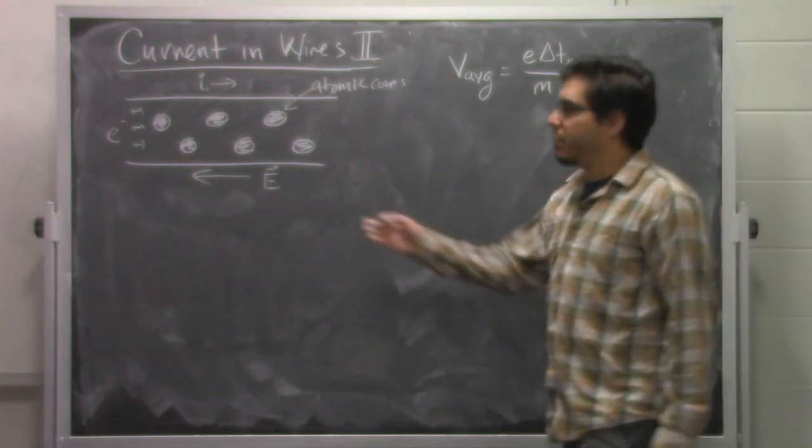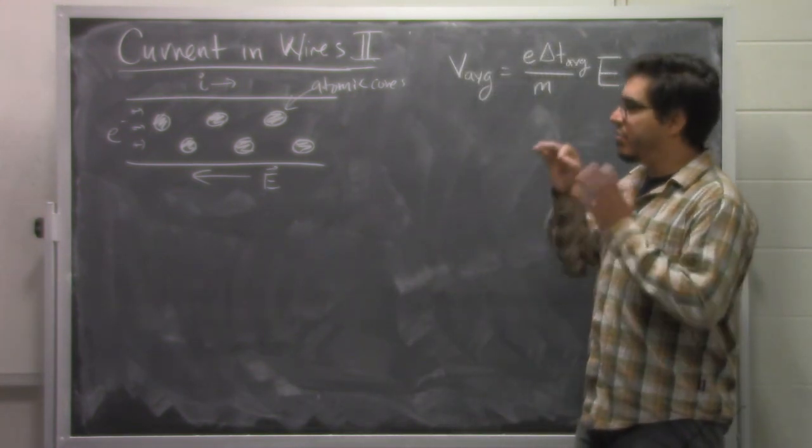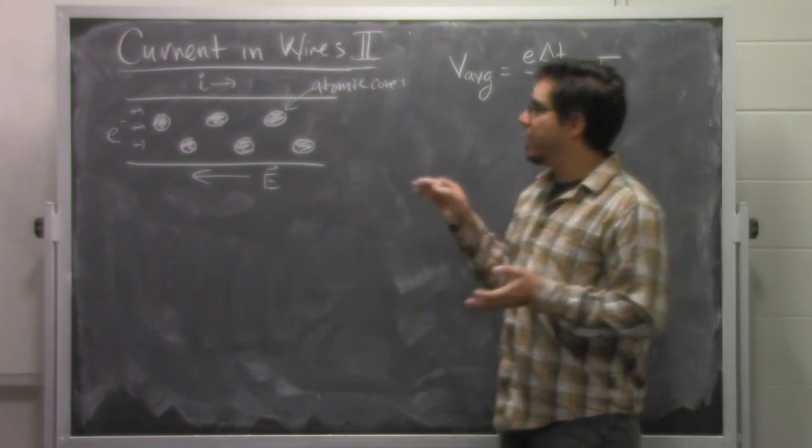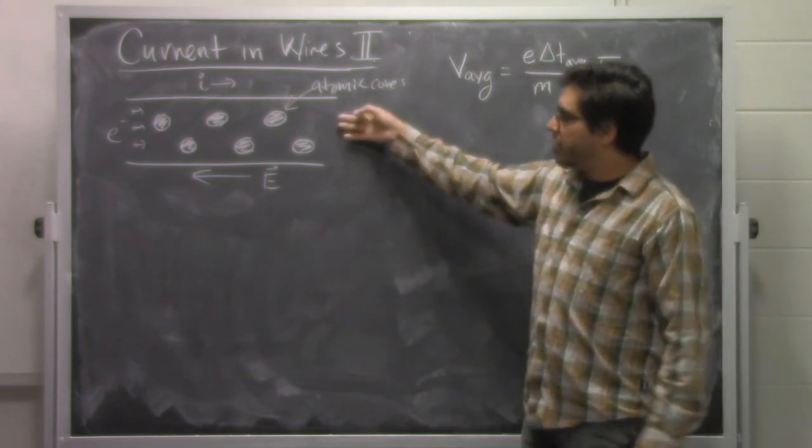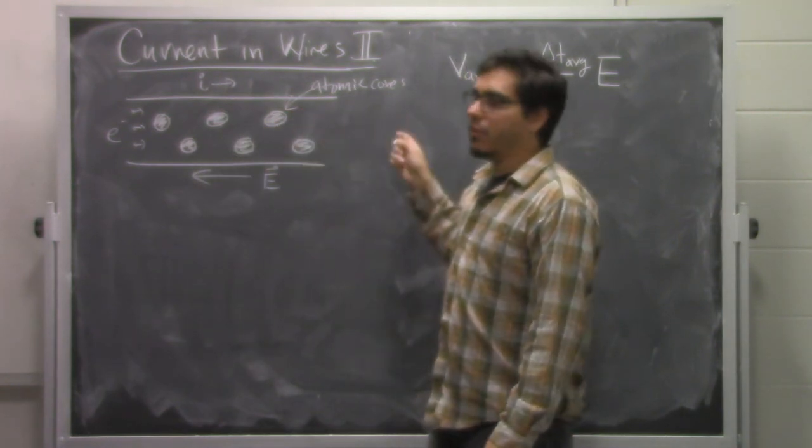In the last video, what we did is we developed this model of how charges move through these wires by zooming in on the wires and looking at how they collide with atomic cores. So this is that picture where the electrons are coming in, they're running into these atomic cores as they move along.